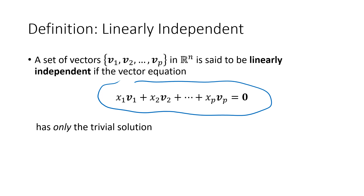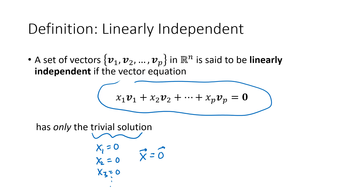That's a homogeneous equation, and there are only two possibilities. Either there's exactly one solution — the trivial solution where x1 = 0, x2 = 0, x3 = 0, and so on — in other words, the vector x equals the zero vector. That's the trivial solution, and sometimes that's the only solution.